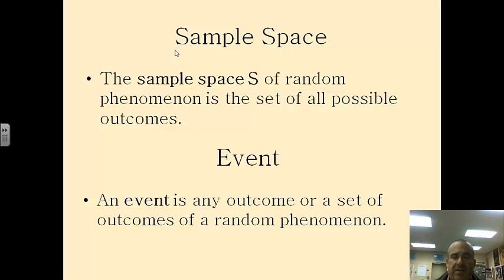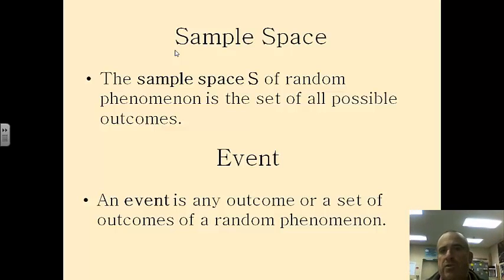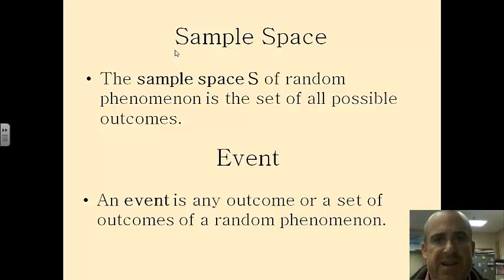If I'm flipping a coin, it's either heads or tails. That's it. If I'm rolling a dice, it's either a 1, a 2, a 3, a 4, a 5, or a 6. That's my sample space.